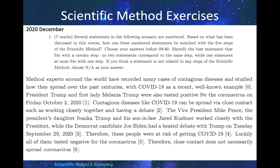Medical experts around the world have recorded many cases of contagious disease and studied how they spread over the past centuries, with COVID-19 as a recent well-known example — this is an observation. President Trump and the First Lady Melania Trump were also tested positive for the coronavirus on Friday, October 2, 2020 — this is unrelated to the scientific method steps, so we put down N/A.